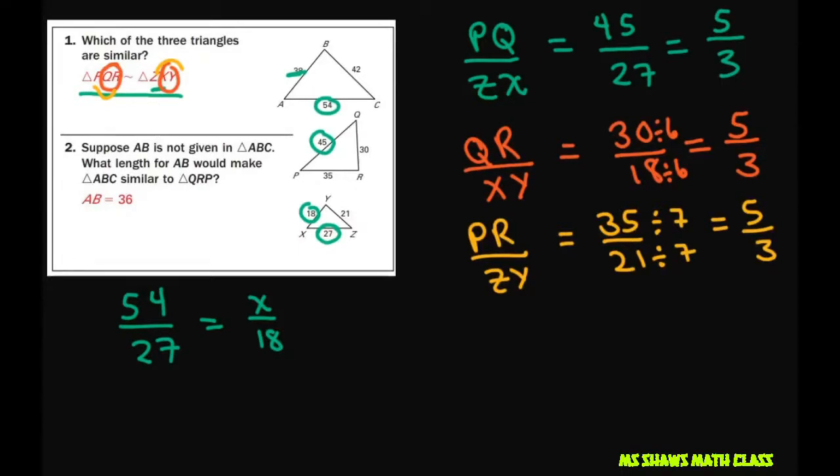I can reduce this by 9. If you divide both the numerator by 9 and denominator by 9, you get this is going to be 2, because 54 divided by 27 is 2, or you can say 2 over 1 equals x divided by 18. You cross multiply here and that gives you 36 equals your x, or in our case that's your AB here.